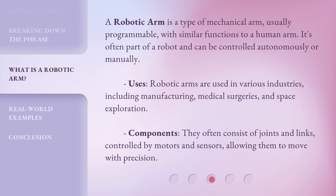Robotic arms are used in various industries, including manufacturing, medical surgeries, and space exploration. They often consist of joints and links, controlled by motors and sensors, allowing them to move with precision.